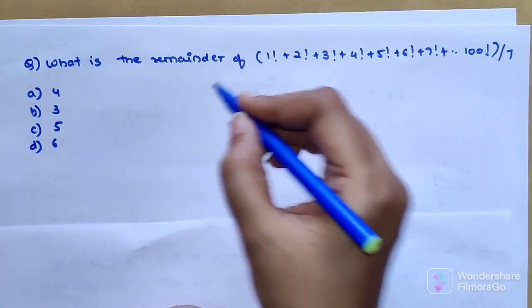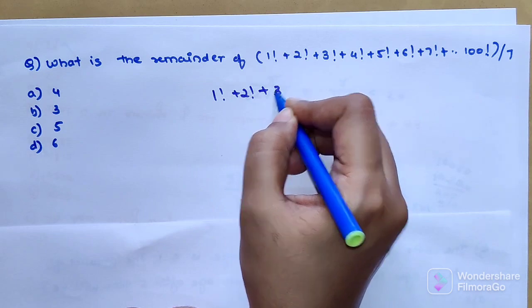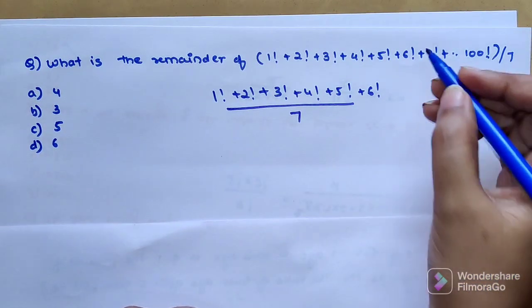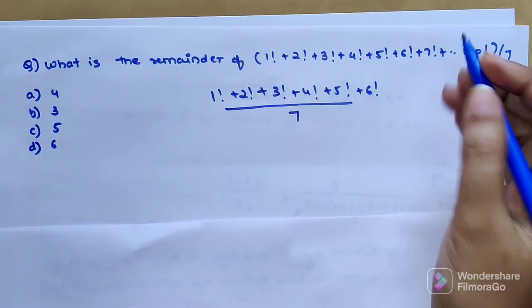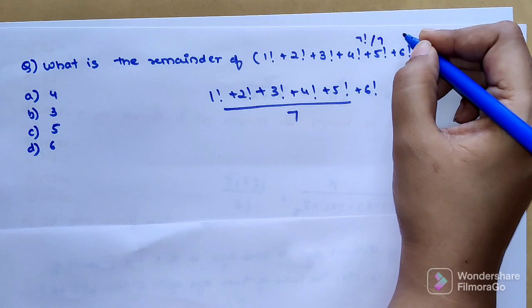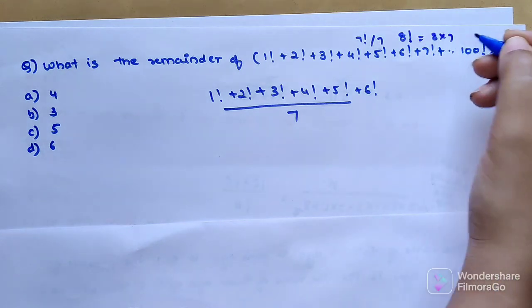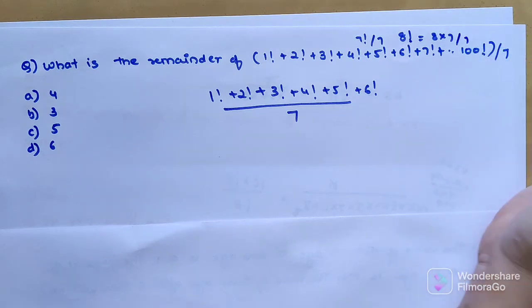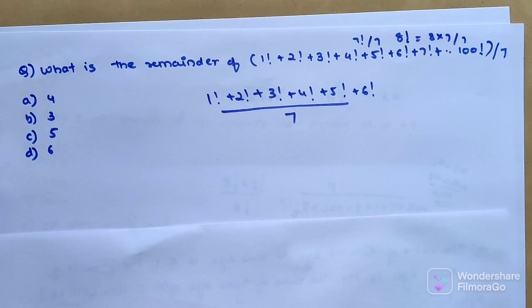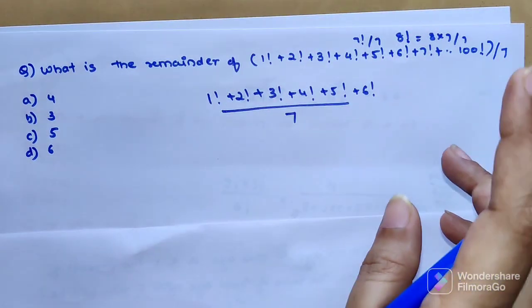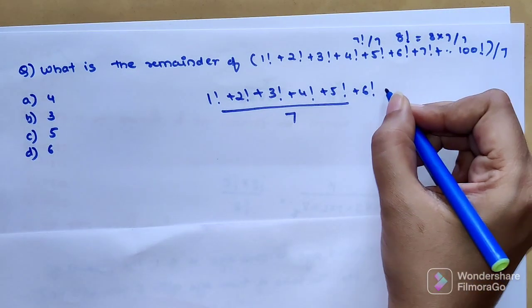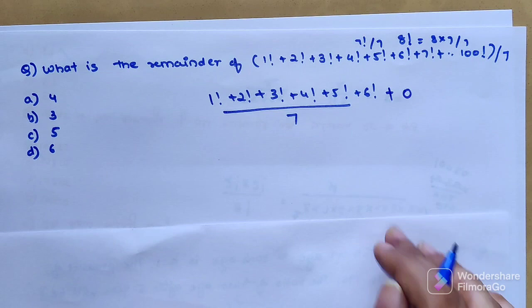All you need to do is find 1! + 2! + 3! + 4! + 5! + 6! divided by 7. Why? Because anything divided by 7 after 6! will have 7!. Then 8!, 9! - all of them can be divided by 7. 8! can be written as 8 × 7 factorial, so that will also be directly divisible by 7. Any number after 6 will have 7 as a product in the numerator, so definitely all those numbers above 6 will be divided by 7, so the remainder would be 0.